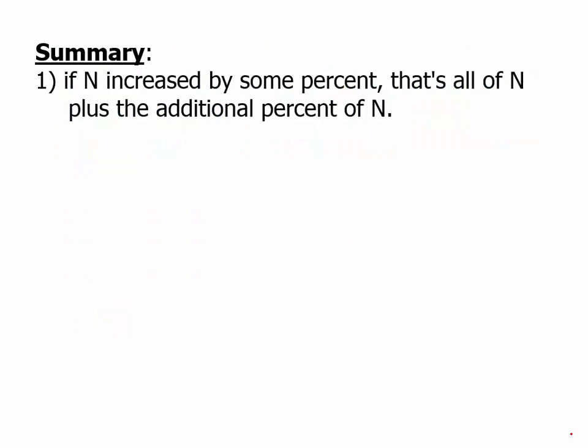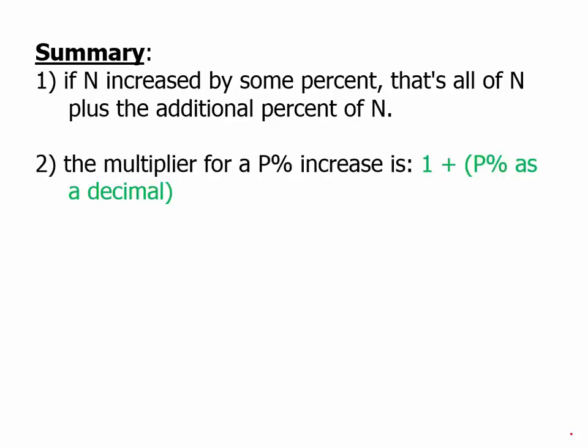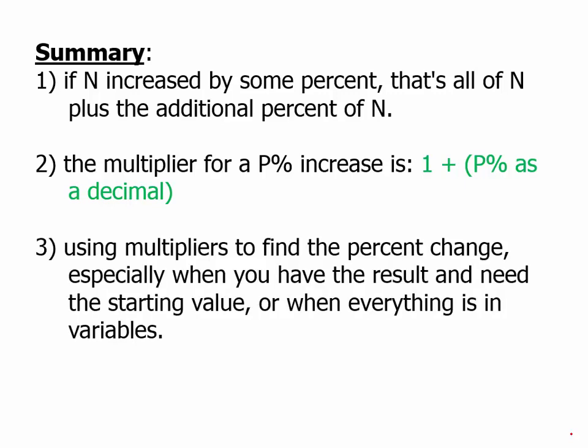In summary, if n increases by some percent, that's all of n plus the additional percentage of n. So if something increases by 35 percent, that is all of it plus 35 percent more. The multiplier for a P percent increase: change P to a decimal and add 1. Multipliers are particularly helpful for percent increases when you have the result and need the starting value, or when everything is in variables.